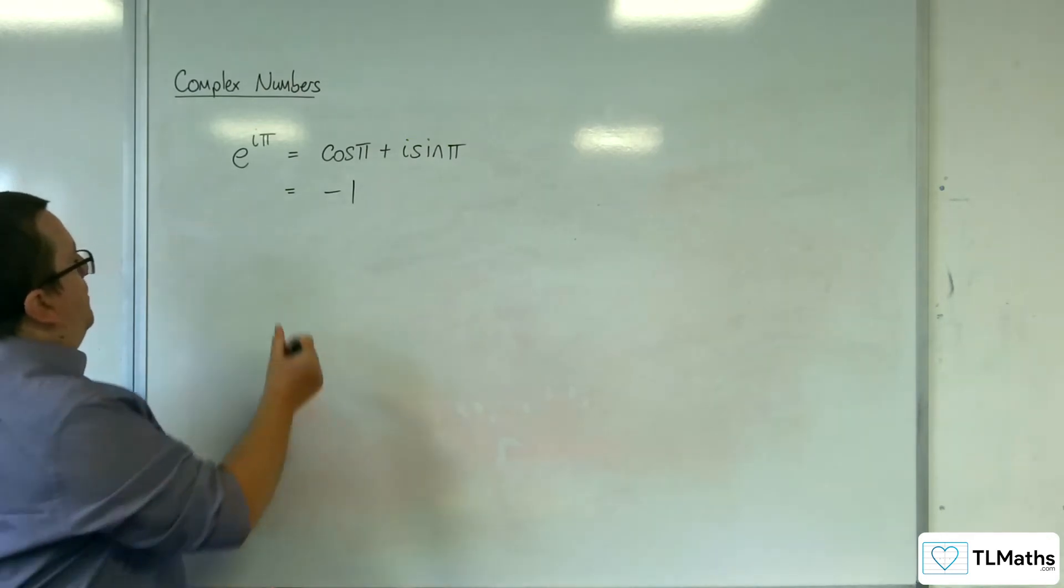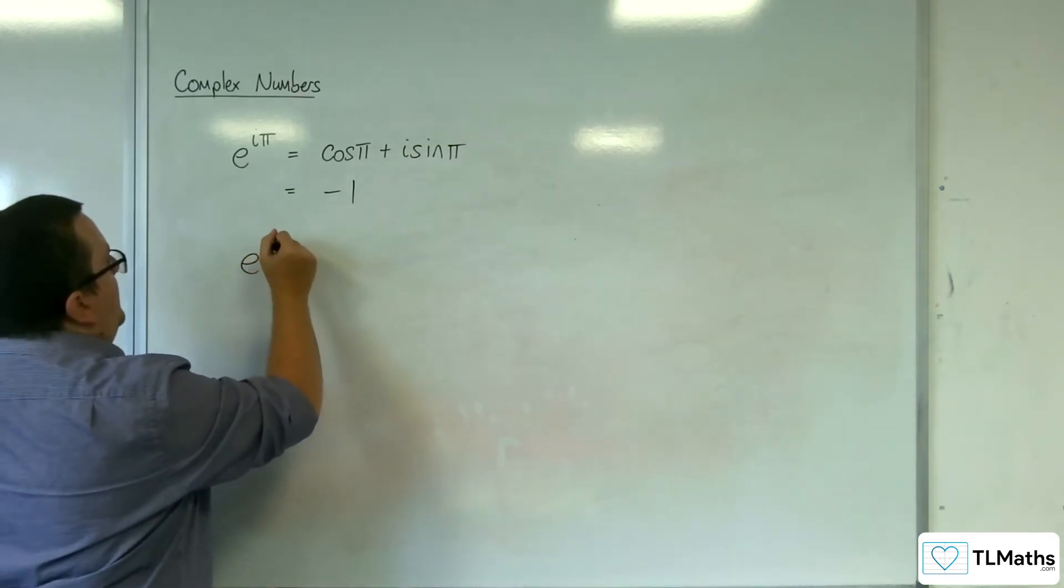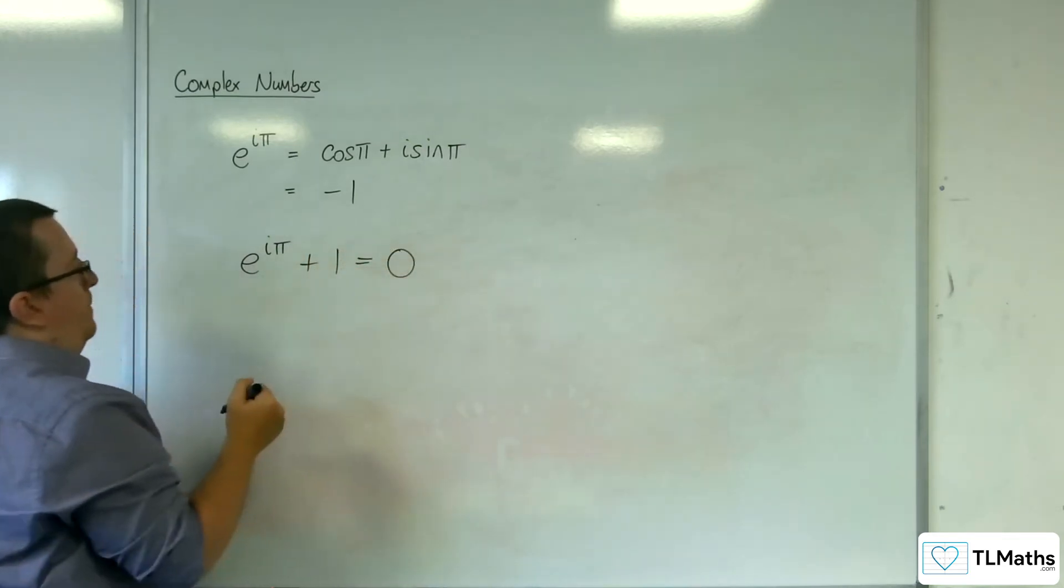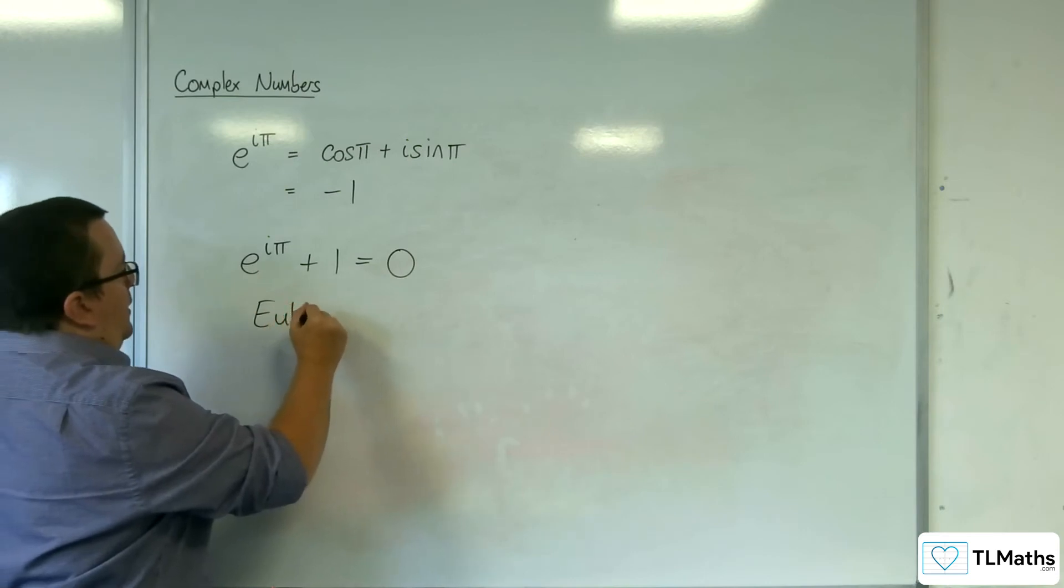Now, if you add 1 to both sides, you get e^(iπ) + 1 = 0. And this is referred to as Euler's identity.